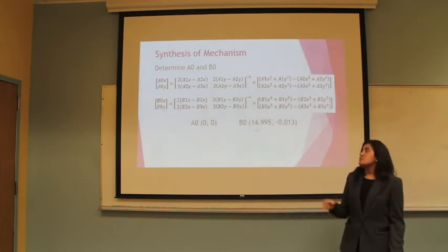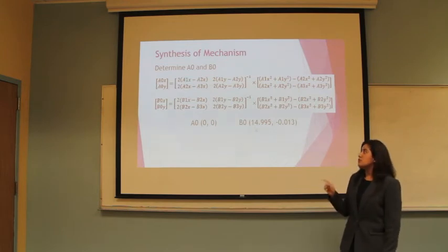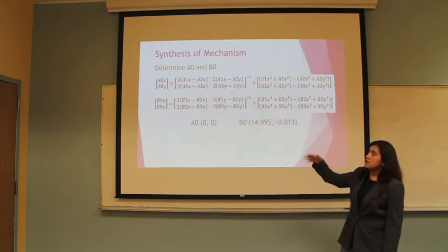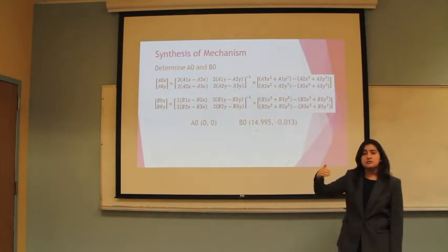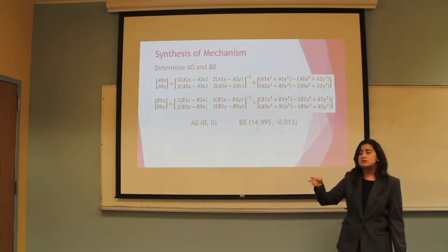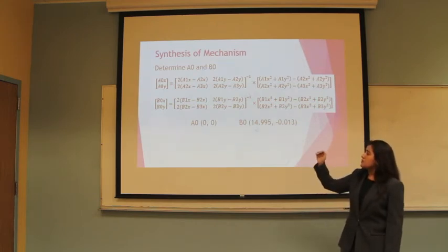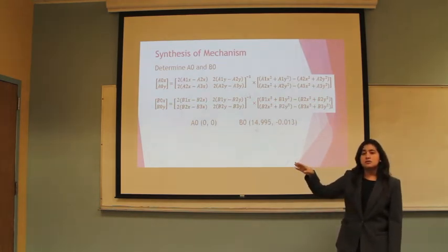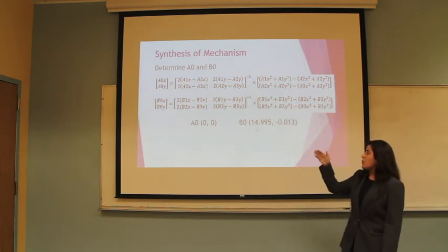To begin, we synthesized this mechanism first finding polar of A and polar B. These are the equations that were given to us, and by plugging in all the values for all three coordinates, we found that polar A was exactly at the origin of 0, 0 and polar B was 14.995 for the x coordinate and the y coordinate was negative 0.013.